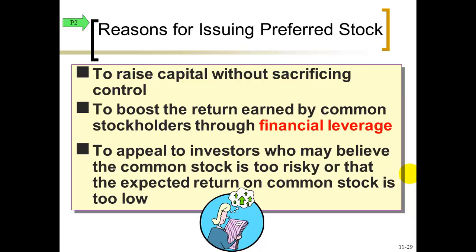Some other reasons for issuing preferred stock besides not giving up control: it may be easier to raise money by selling preferred stock, because preferred stockholders get their dividends first and get paid before common if the company liquidates. There's less risk when you own preferred stock, but also less reward — if the company is very profitable, the common share price will increase faster than the preferred share price.